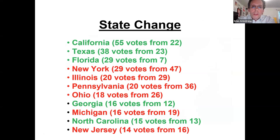California went from 22 to 55 electoral votes. Texas went from 23 to 38. Florida went from 7 to 29. The red states are the ones that have decreased — most significantly New York going from 47 to 29, and Pennsylvania also dropped significantly. The green ones have increased, the red ones decreased. New Jersey is one that's gone down slightly by two votes.